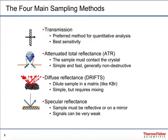The first of the four techniques is transmission, in which the IR beam passes through the sample and onto the detector. In attenuated total reflection, the IR beam enters a crystal, interacts with the sample which is on the surface of that crystal, then exits the crystal and passes onto the detector.